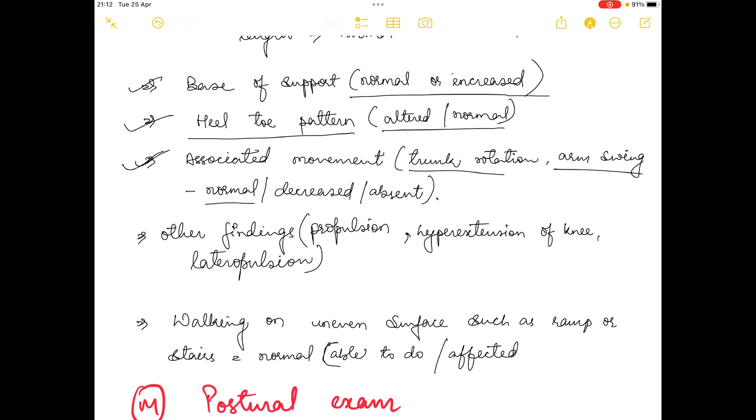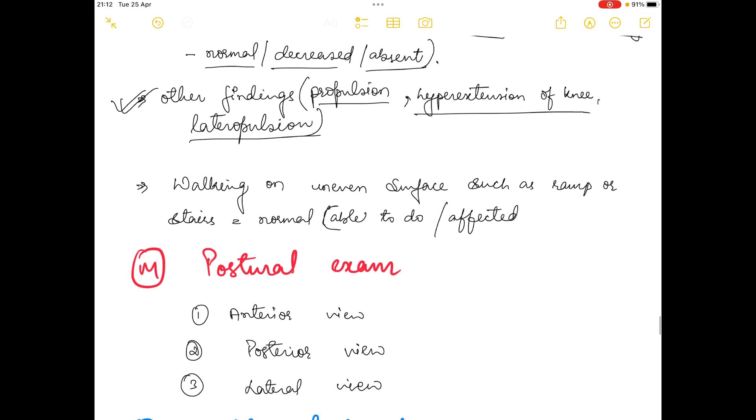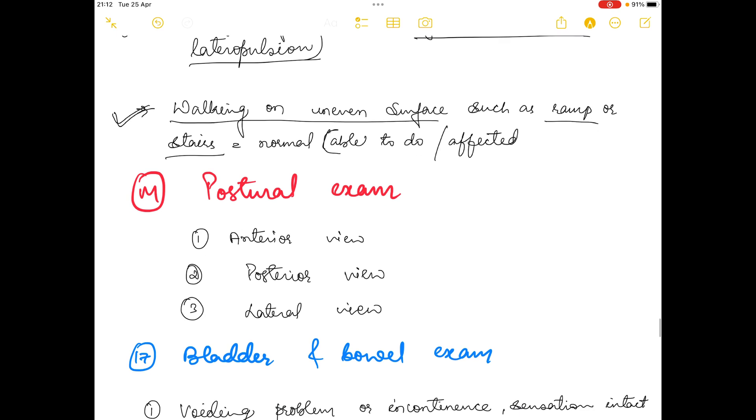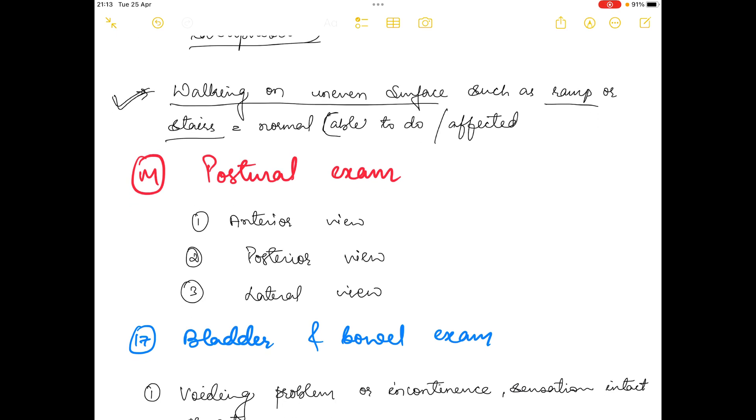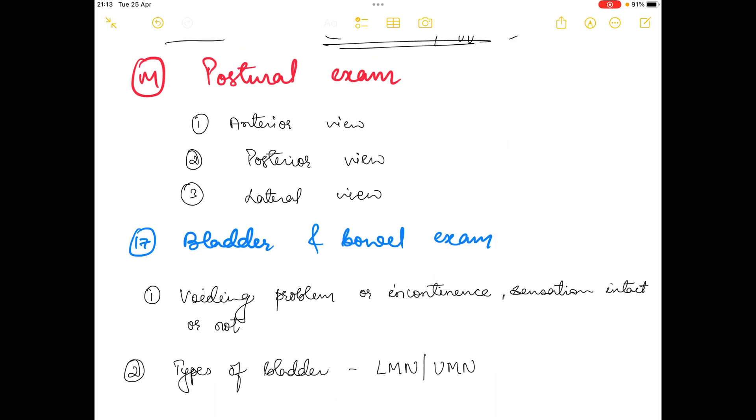In other findings, you could also assess if the person has hyperextension of knee, propulsion gait, or presence of lateral propulsion. These come under other findings. You could also tell the patient to walk on uneven surfaces such as any ramp or stairs and assess if the patient is able to do it or not.